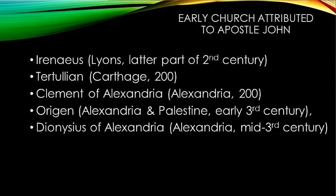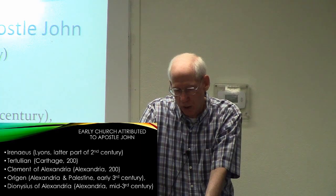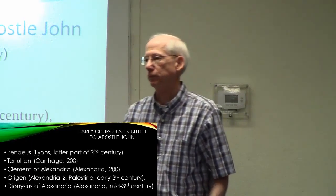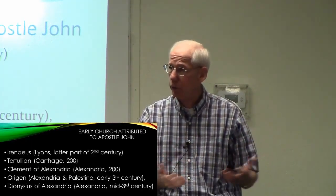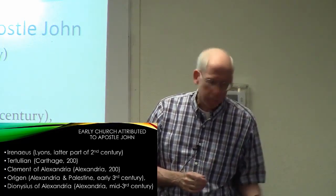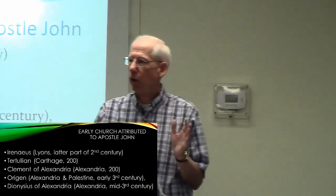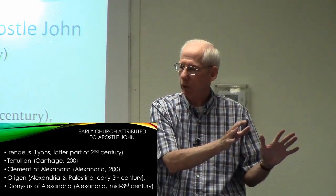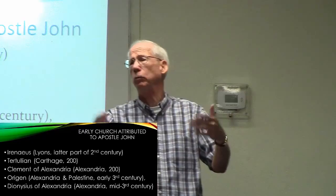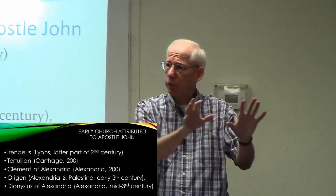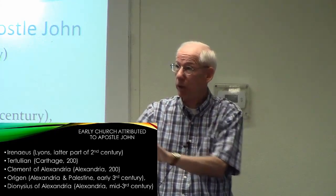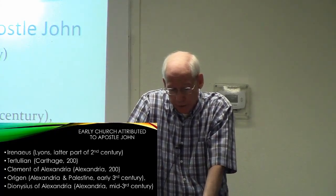Irenaeus, who was bishop of Lyon in modern France, writing around A.D. 180, attributed 1 John to John the disciple of the Lord and the author of the fourth Gospel. This same view was reflected in the writings of Tertullian, Clement of Alexandria, Origen, and Dionysius of Alexandria. So the starting place is that church tradition unanimously attributes 1 John to the Apostle John. You may say, 'That's just tradition.' No — it's important. When you have tradition that unanimously attributes it, you have to pay attention, because they are much closer to the situation and circumstance than we are.